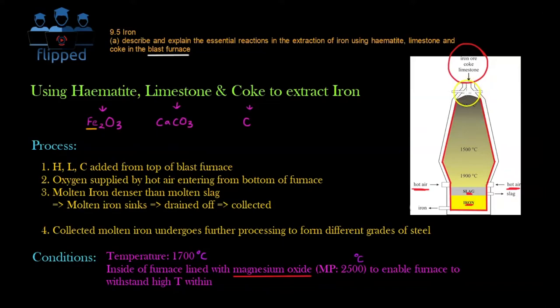So how do we actually insulate this? It's using magnesium oxide, which is Mg2+ and O2-, which gives you MgO. And magnesium oxide has a melting point of 2500 degrees Celsius. So it's no problem to withstand the heat. So you can see that this inner red coating here, these are lined with magnesium oxide. So that when the reaction happens at 1700 degrees Celsius, it will not melt. It will still hold its integrity, its structure here. And so because of its high melting point, it enables the furnace to withstand the high temperature within.